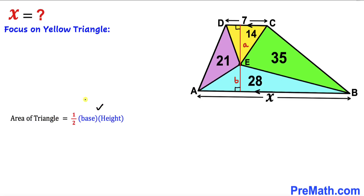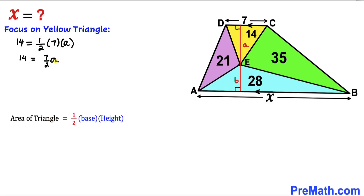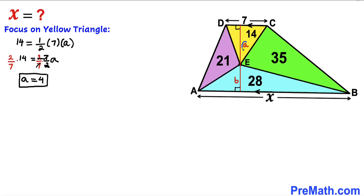Filling in the formula: 14 equals one-half times 7 times a, which gives us 14 equals 7 divided by 2 times a. To isolate a, we multiply both sides by 2 divided by 7 — these cancel each other out. Simplifying the left-hand side gives us a equals 4 units. So the height of the yellow triangle is 4 units.